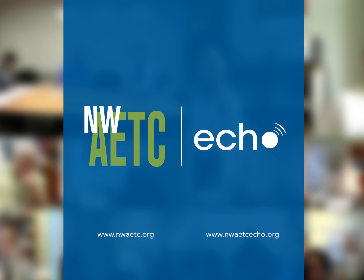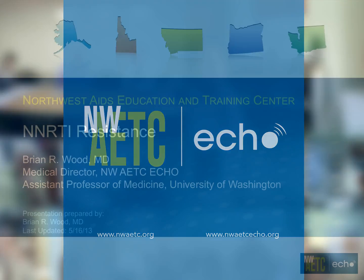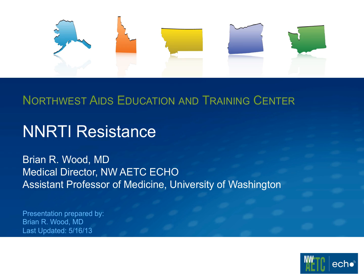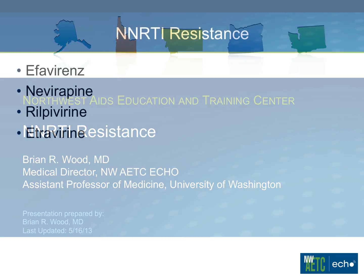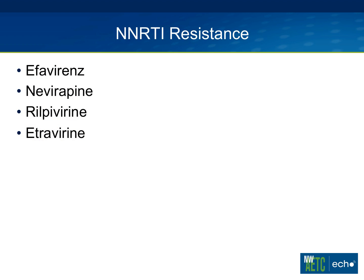Today we're going to talk about NNRTI resistance. This is part two of a two-part series on resistance and interpreting genotype resistance assays. I'm going to talk about the commonly used NNRTIs, resistance that happens with these drugs, and also cross-resistance between the medications, which can be a major issue. We'll talk about efavirenz, nevirapine, rilpivirine, and etravirine.